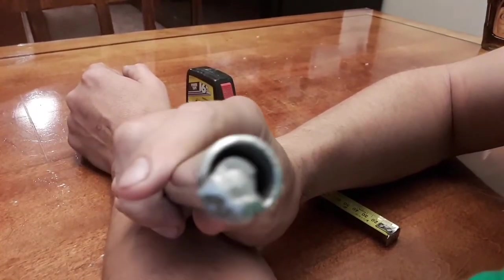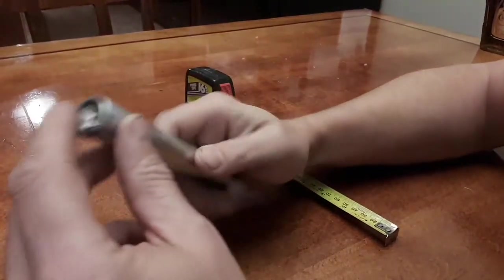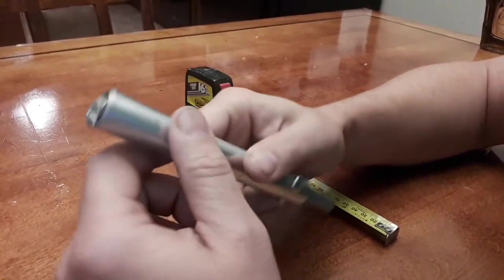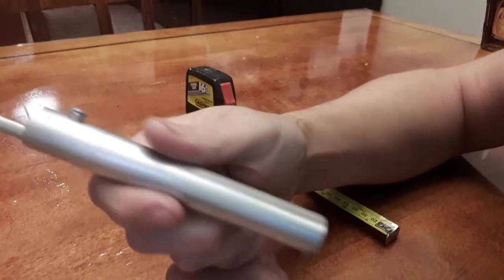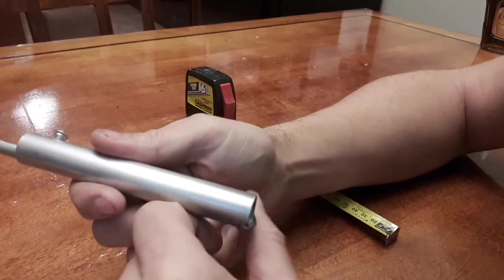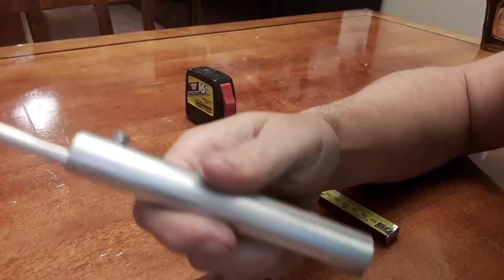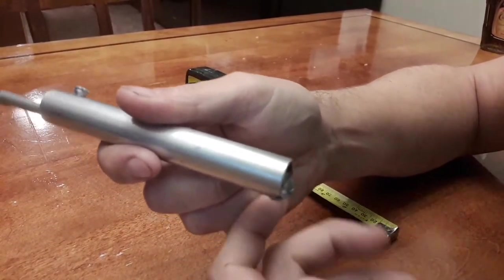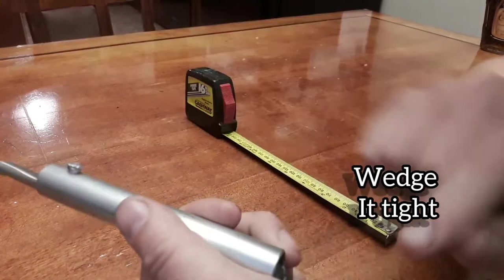I just did a little gobble weld on that bar to the tubing. If you're not much into TIG welding it's like you could just put a little pin of some sort in there to hold it solid.